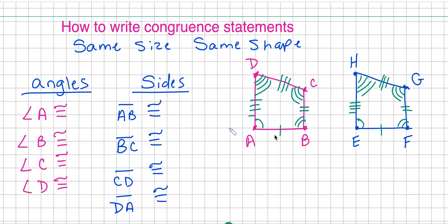If I look at angle A, angle A has one arc drawn, so I'm going to go over to the other figure and find the angle that has one arc drawn. So angle A is congruent to angle E. Angle B has two arcs drawn, so I'm going to come over to this figure and find the angle that has two arcs drawn — that's going to be angle F.